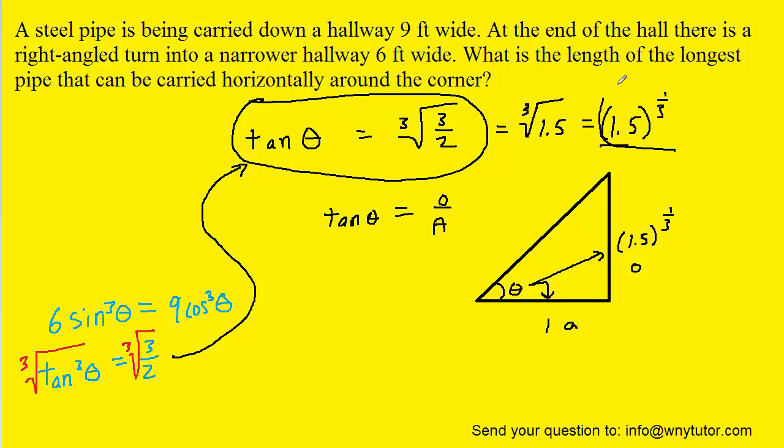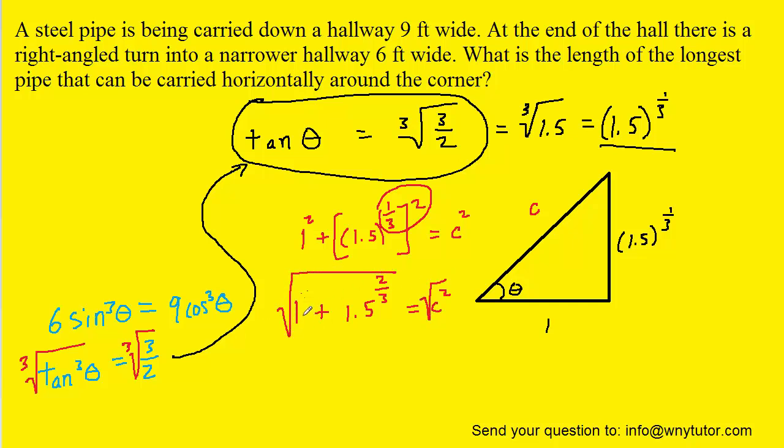To find the hypotenuse, we could use Pythagorean theorem. Notice, right here, that will become to the 2 thirds. And then if we square root both sides, we can see that c is equal to the square root of 1 plus 1.5 to the 2 thirds.